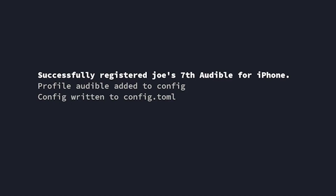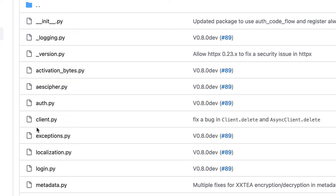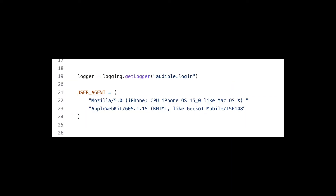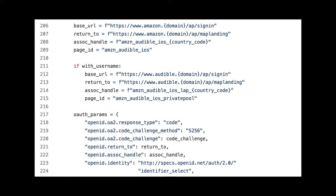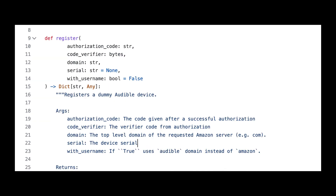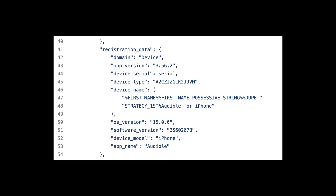Once you've done all this, you should see a message saying something like "Successfully registered your name's Audible for iPhone". After skimming some of the code from this package, what I'm assuming is happening on the back end is that it spoofs a mobile browser to log into your account and then scrapes authentication data from that session. Then using this authentication data, it somehow registers a new device under your account pretending to be an iPhone, which will allow it to make requests for downloads and activation bytes — all of which I'm sure is fine under Amazon's terms of use.